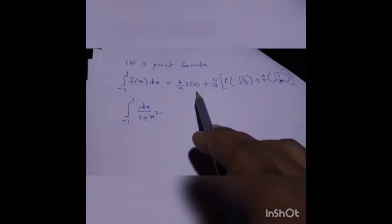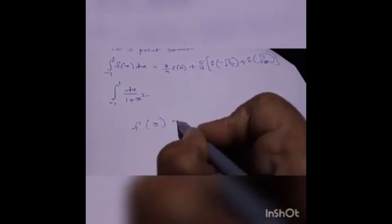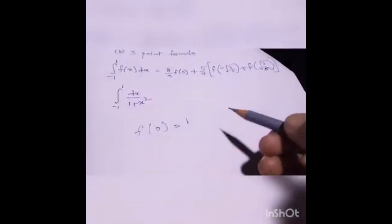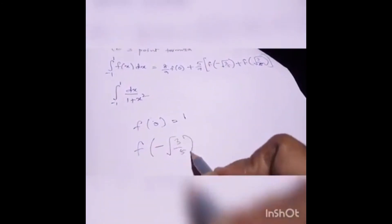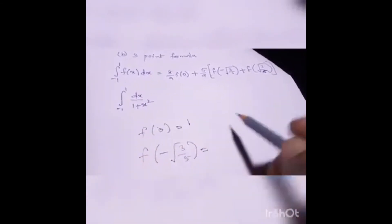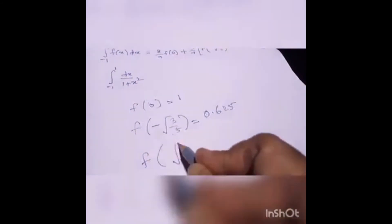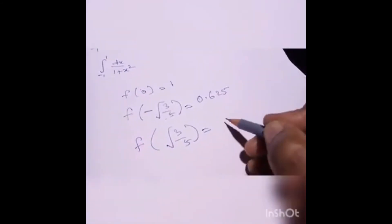Substituting: first we find f(0). Substituting 0 for x we get 1. Then we find f(minus square root of 3/5) — substituting x equals minus square root of 3/5 into 1 over (1 plus x squared), we get 0.625. Then f(plus square root of 3/5) also gives 0.625. So we have the values: f(0) equals 1, f(minus square root of 3/5) equals 0.625, and f(plus square root of 3/5) equals 0.625.